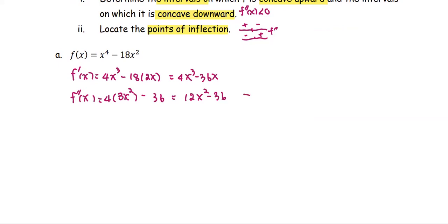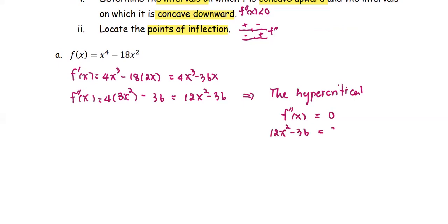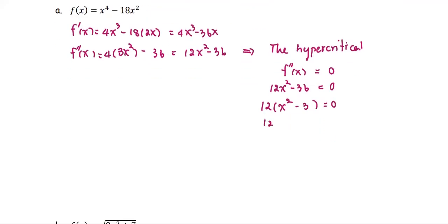We move on to find the hypercritical points using the second derivative. Set it equal to 0 and solve for x: 12x squared minus 36 equals 0. Factor out 12, so we have 12 times the quantity x squared minus 3 equals 0. Factor completely: we have x minus square root 3 times x plus square root 3 equals 0. So x equals square root 3 and x equals negative square root 3.